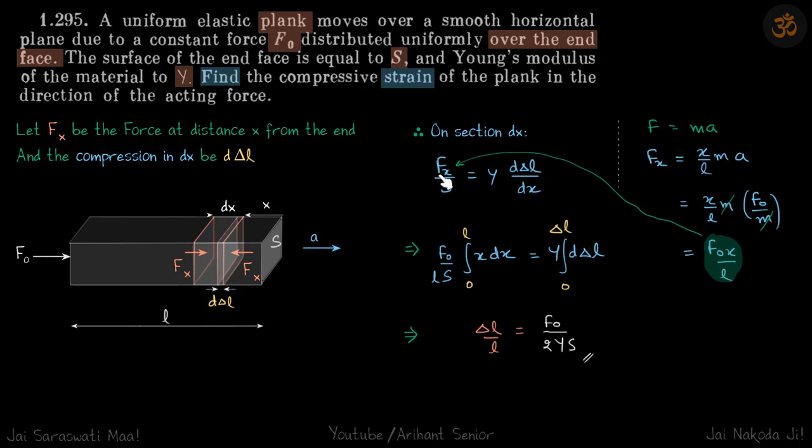So when we put that here, we get the relation. So we have the terms of x and d delta L. So we take x terms on one side, integrate x varies from 0 to L and delta L varies from 0 to delta L. So we do that and we get our strain—overall strain for the rod—that comes to be f not by 2YS. All right.